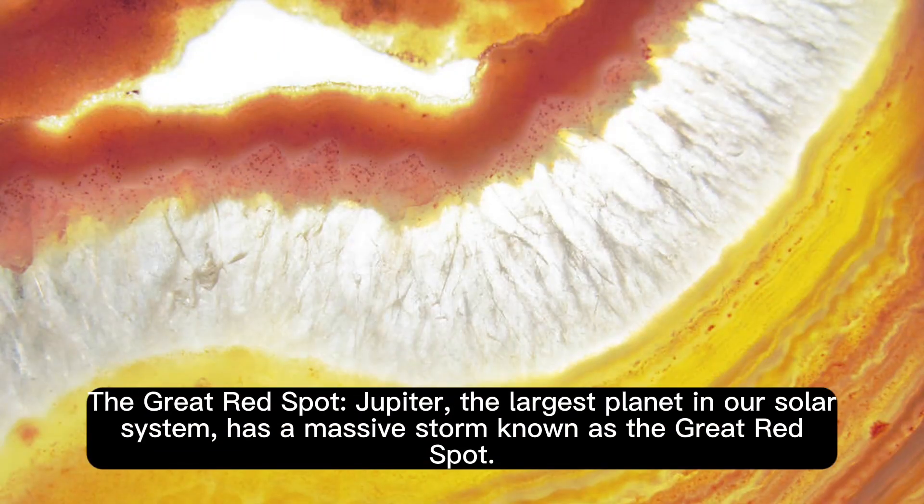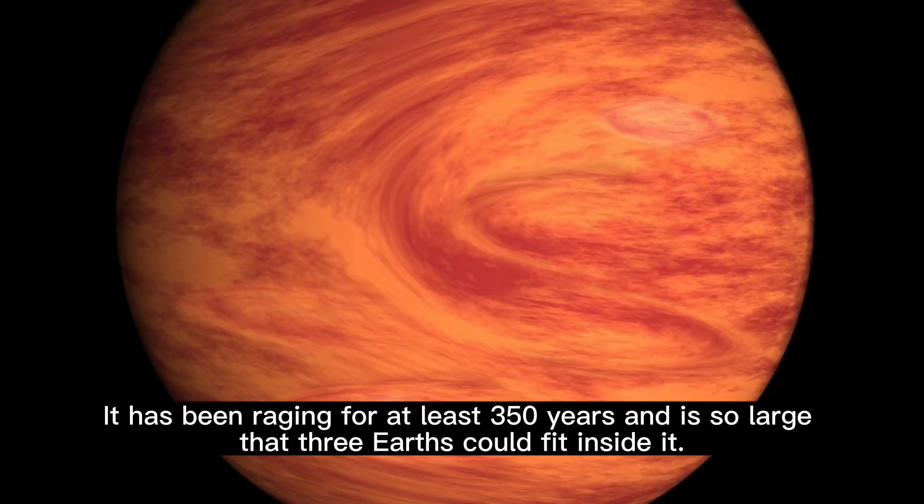The Great Red Spot. Jupiter, the largest planet in our solar system, has a massive storm known as the Great Red Spot. It has been raging for at least 350 years and is so large that three Earths could fit inside it.